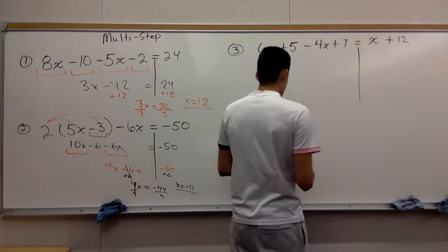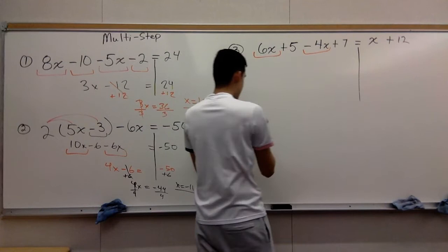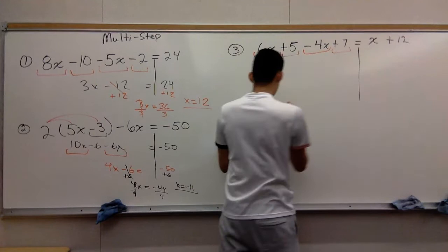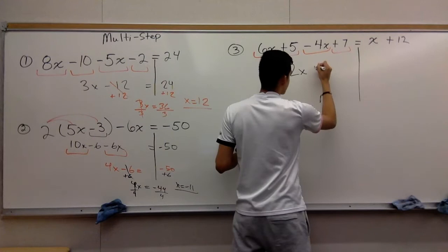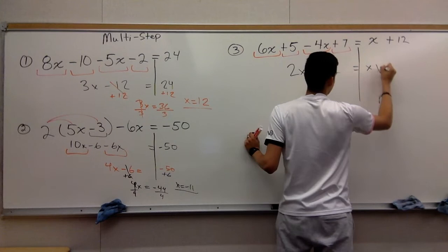Now for the final one. Like I said before, you combine like terms. Whatever you see as the same - you combine the 6x and negative 4x. The constants 5 and 7, you combine those as well. Six minus 4 gives you 2x. Five plus 7 gives you 12. Equals x plus 12.